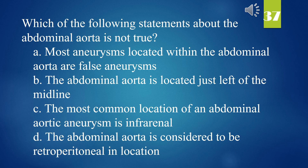Which of the following statements about the abdominal aorta is not true? A. Most aneurysms located within the abdominal aorta are false aneurysms. B. The abdominal aorta is located just left of the midline. C. The most common location of an abdominal aortic aneurysm is infrarenal. D. The abdominal aorta is considered to be retroperitoneal in location. The answer is A. Most aneurysms located within the abdominal aorta are false aneurysms.